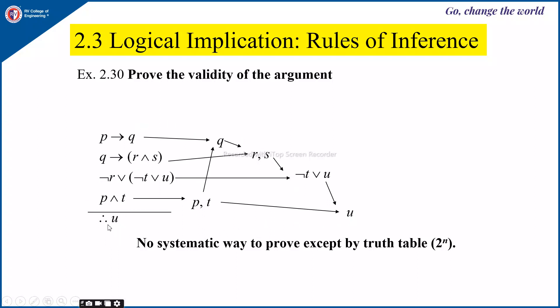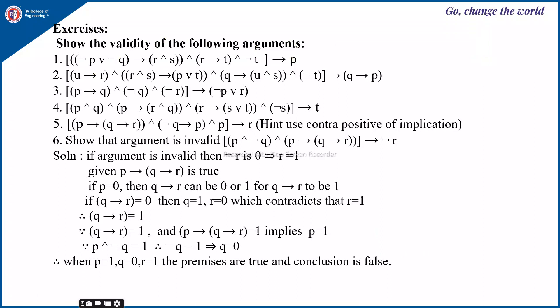There is no single systematic way to prove validity except by the truth table, but the drawback of the truth table is that the number of rows depends on the number of variables. Using rules of inference, you can reduce the number of steps. These are some exercises we will consider in the next examples. Thank you.